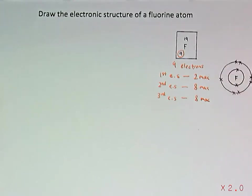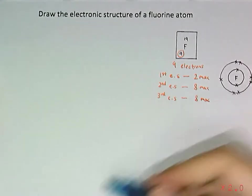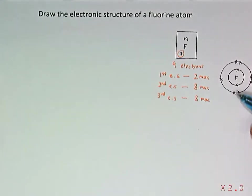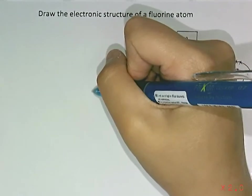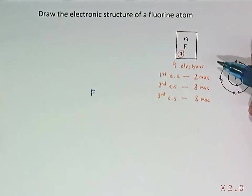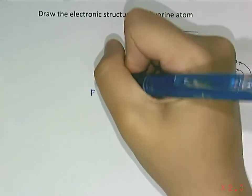So for fluorine, the first electron shell, we're going to put in 2. I'm going to write an F here, which is its nucleus.